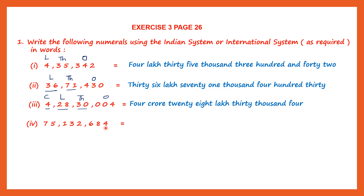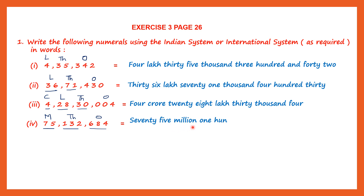Next one — which system is this? We have one, two, three, comma, again one, two, three, comma, and then one, two. Whenever you have commas after every three digits, that is the international system. The places in the international system are ones, tens, hundreds, thousand, ten thousand, hundred thousand, million, ten million. Ones, tens, hundreds is the ones period; thousand, ten thousand, and hundred thousand is the thousands period; million and ten million is the millions period. So how do we read it? Seventy-five million, one hundred thirty-two thousand, six hundred eighty-four.